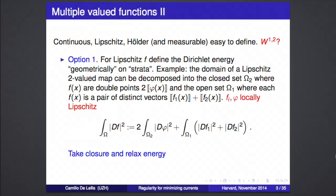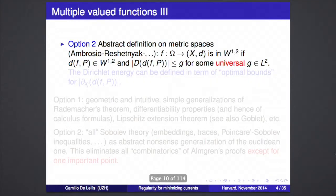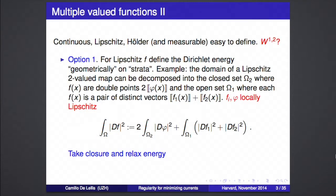But there is one problem: with this definition it's extremely difficult to work. This is essentially the definition that Almgren has — actually he has a more complicated definition because he first proves a differentiability theorem. Nonetheless, it's quite complicated to work with. So there's another way, a bit abstract. You could ask: what is a W^{1,2} space? A W^{1,2} space can be defined by completion: take all Lipschitz maps with finite Dirichlet energy, take sequences of Lipschitz maps, and look at possible limits.